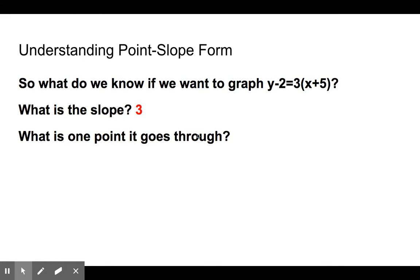What's one point that it goes through? We have this plus 5 and this minus 2. The x-coordinate — remember, it's the opposite of the sign right next to the x. So if this is plus 5, the x-coordinate is going to be minus 5. The y-coordinate, the opposite of the sign, is going to be positive 2. So the point is negative 5, positive 2.